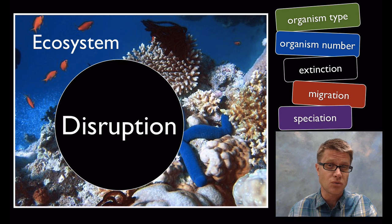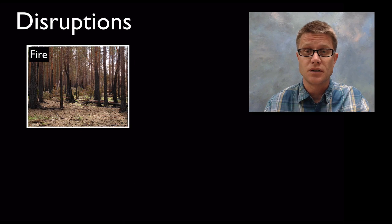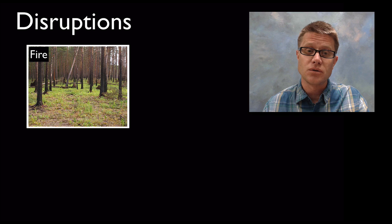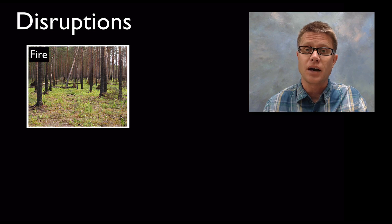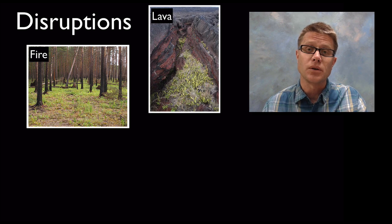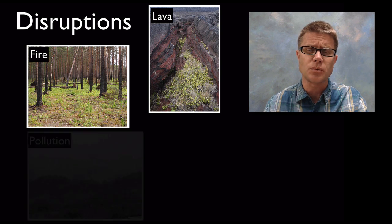Disruptions are going to stress an ecosystem, and depending on the health of the ecosystem it's going to respond. Examples include a fire that sweeps through a forest — life comes back after, but it might not be exactly the same as before. Or new rock being formed, like a lava flow, where life has to reestablish itself. These would be more natural disruptions.